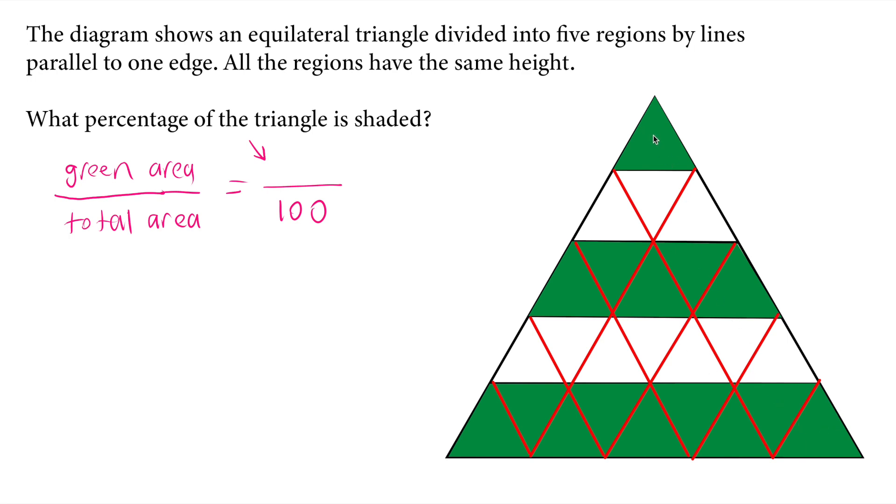Green triangles do we have? One, two, three, four, five, six, seven, eight, nine, ten, eleven, twelve, thirteen, fourteen, fifteen.